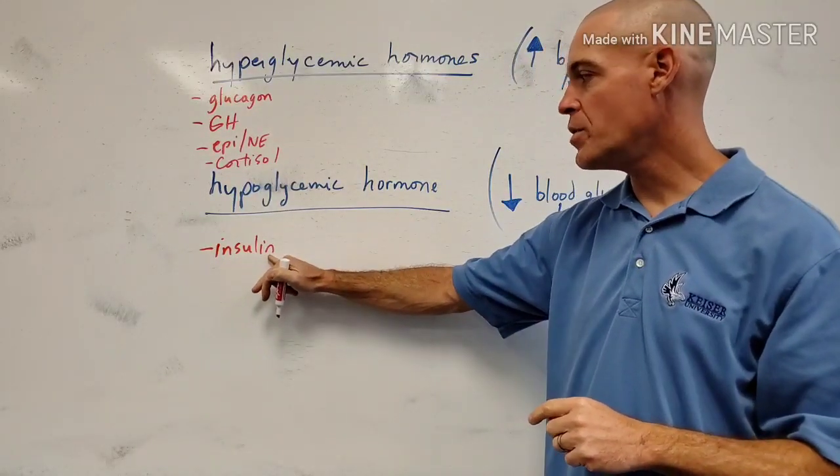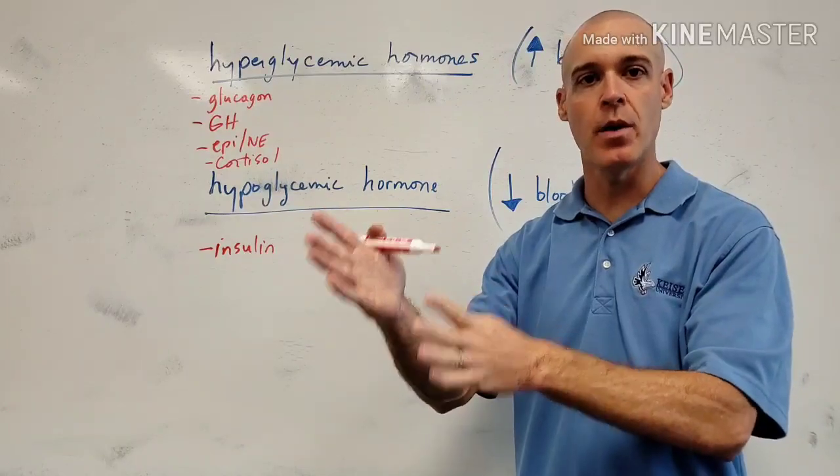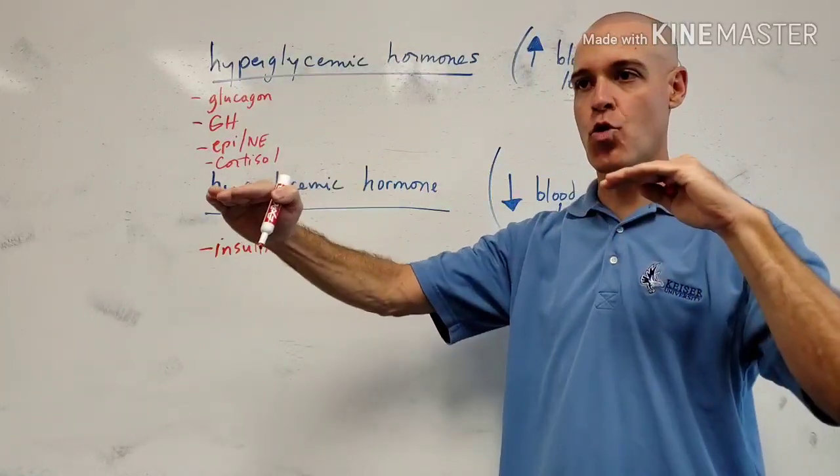And insulin is going to be secreted to bring the blood sugar levels down to normal again. So this hormone is secreted basically during and immediately after a meal to bring our blood sugar levels back down to a normal level.